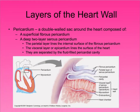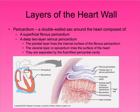The layers of the heart include the pericardium, which is a double-walled sac that helps keep the heart cushioned. You have a superficial fibrous pericardium, a deep two-layer serous pericardium, the parietal layer that lines the internal surface, and the visceral layer that lines the outer surface of the heart. These are separated by the pericardial cavity.